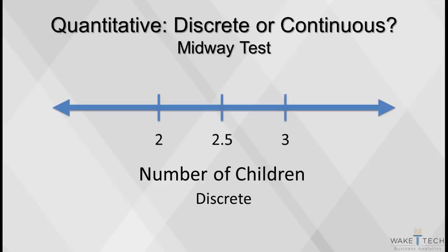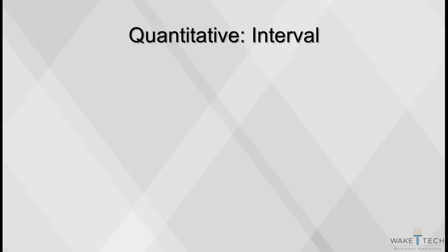The interval level of measurement ranks data. It can be either discrete or continuous. With interval variables, precise differences between units of measure exist, but there's no meaningful zero.